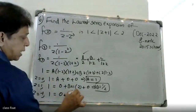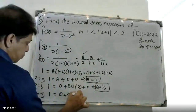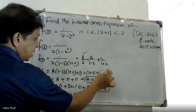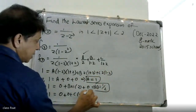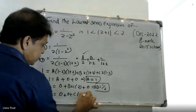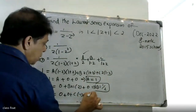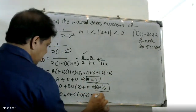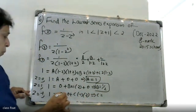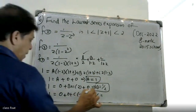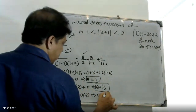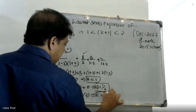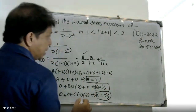Third time: minus 1, minus 1 into 1 minus 1. This is the value of C: minus 1. Then 1 by 2. B, A, B, C, and B.